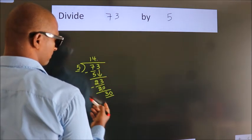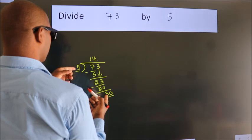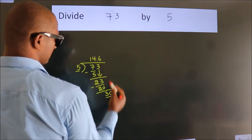So 30. When do we get 30 in the 5 table? 5, 6, 30.